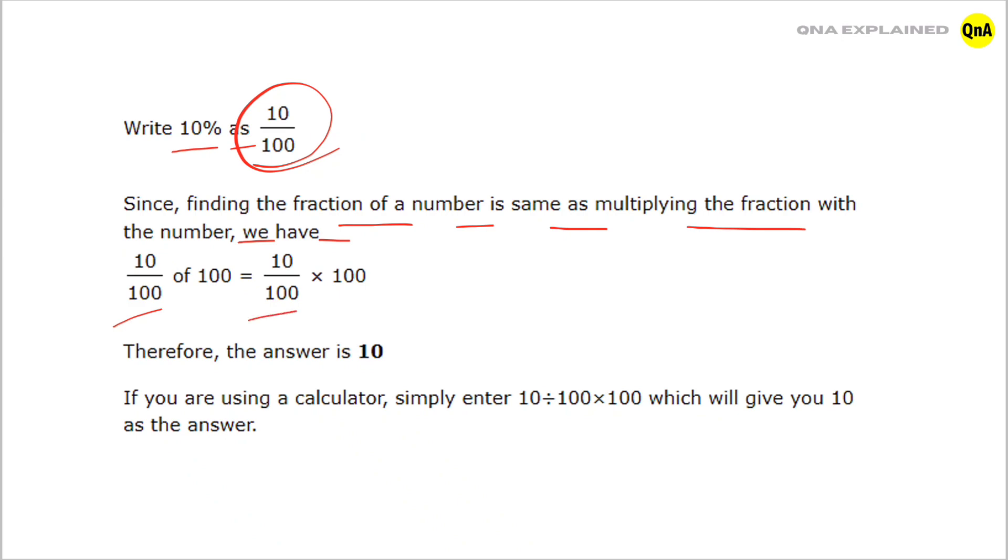First, we cancel out 100 by 100. After solving, we get 10 × 1, which equals 10. Therefore, the answer is 10. If you're using a calculator, simply enter 10 ÷ 100 × 100.